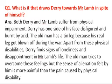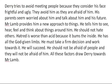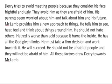What is it that draws Derry towards Mr. Lamb in spite of himself? Both Derry and Mr. Lamb suffer from physical impairment. Derry has one side of his face disfigured and burnt by acid; the old man has a tin leg. Apart from these physical disabilities, Derry finds signs of loneliness and disappointment in Mr. Lamb's life. Derry tries to avoid meeting people because they consider his face frightful and ugly — log uska face dekhkar darte hain — and that is why he is lonely and sad.